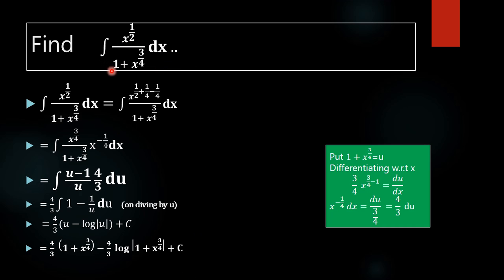So what we have done here is: we first brought x raised to 3/4 to the numerator by adding 1/4 and subtracting 1/4 from the power. Then we put 1 plus x raised to 3/4 as u to simplify the form. This is a useful tip: if you have something like x divided by 1 plus x, put the denominator as u — that is, put 1 plus x as u — and you can easily perform the integration.